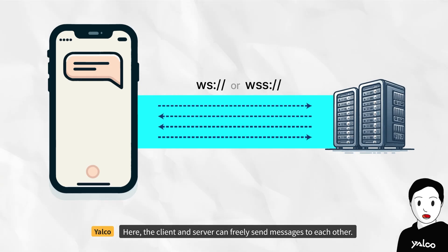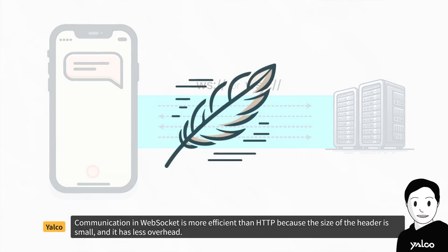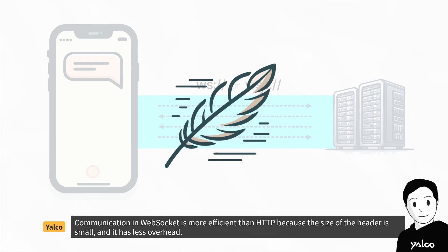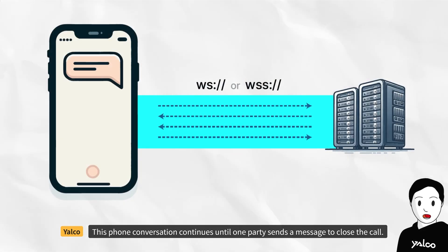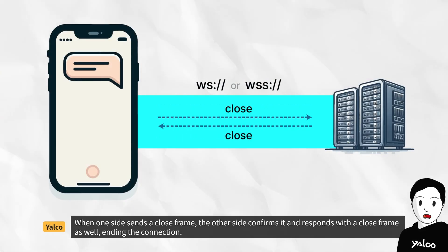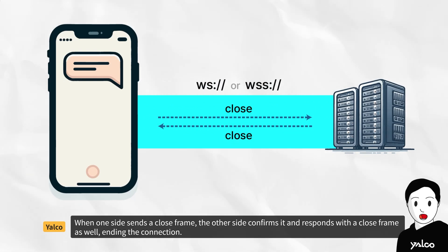The client and server can freely send messages to each other. Communication in WebSocket is more efficient than HTTP because the size of the header is small and it has less overhead. This phone conversation continues until one party sends a message to close the call. When one side sends a close frame, the other side confirms it and responds with a close frame as well, ending the connection.